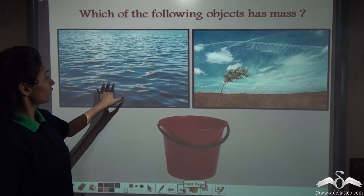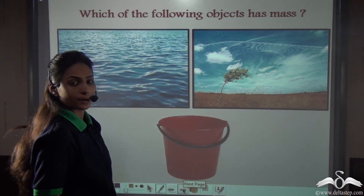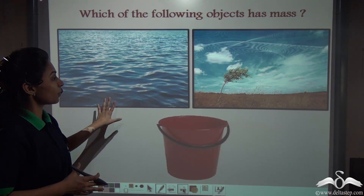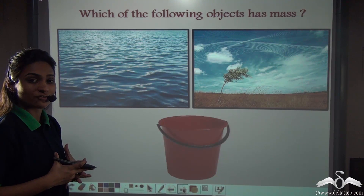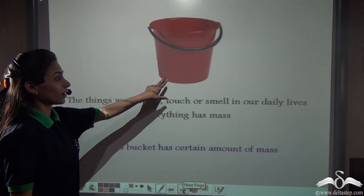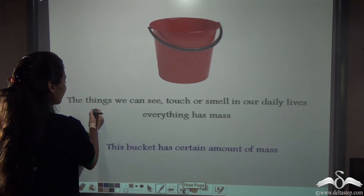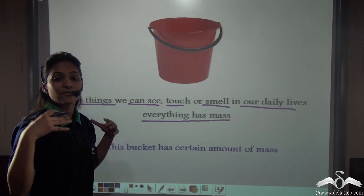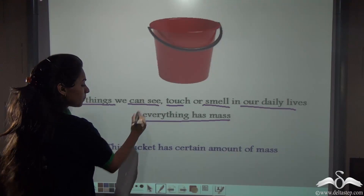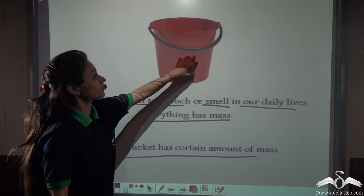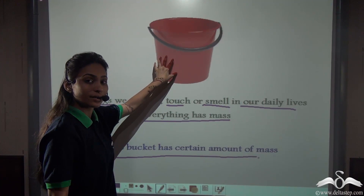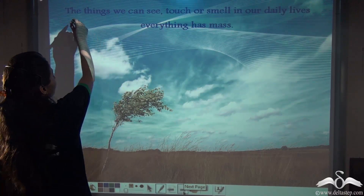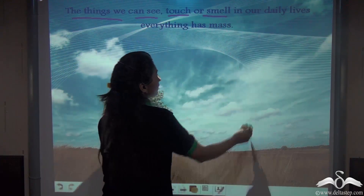Now can you tell me which of the following has mass: water, air, or this bucket? We know that everything around us is made up of matter — some kind of stuff. You will say the bucket has a certain mass. Why? Because the things we can see, touch, or smell in our daily lives — everything has mass. This bucket is made up of some kind of stuff, so it has a certain amount of mass.